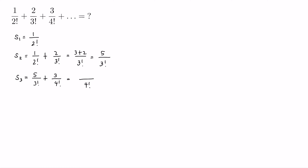So this is equal to 4 times 5, that is 20, and then plus 3, which is equal to 23 over 4 factorial.